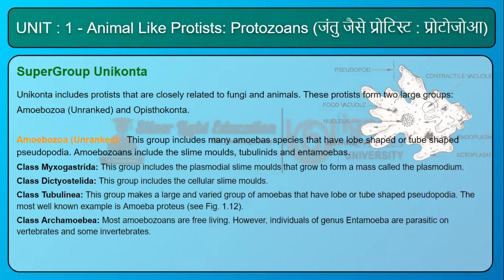Class Myxogastrida includes the plasmodial slime molds that grow to form a mass called the plasmodium. Class Dictyostellida includes the cellular slime molds. Class Tubulinea is a large and varied group of amoebas with lobe- or tube-shaped pseudopodia; the most well-known example is Amoeba proteus. Class Entamoeba: most amoebozoans are free-living; however, individuals of genus Entamoeba are parasitic on vertebrates and some invertebrates.